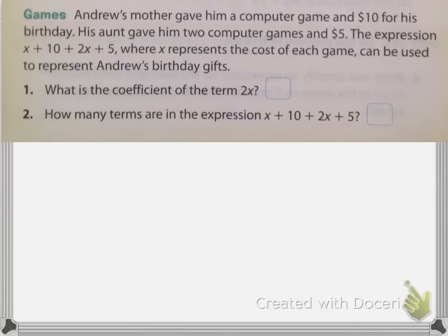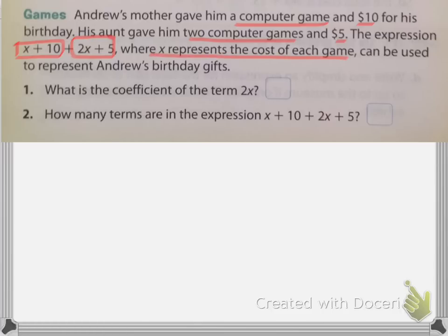Still on textbook page 495, if you look at the bottom where it says real world link — it says Andrew's mother gave him a computer game and $10 for his birthday. His aunt gave him two computer games and $5. So Andrew's mother gave him 1 game and $10, and his aunt gave him two computer games and $5. The expression x plus 10 plus 2x plus 5, where x represents the cost of each game, can be used to represent Andrew's birthday gifts.